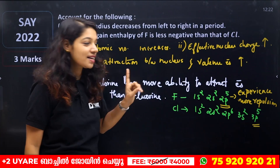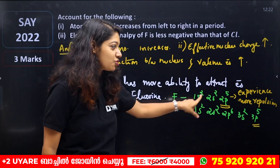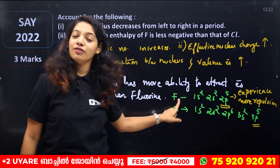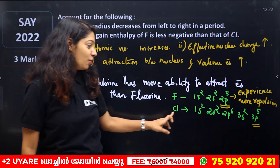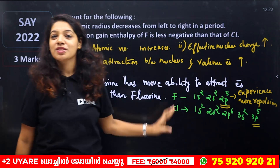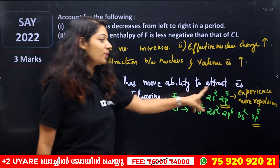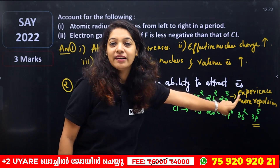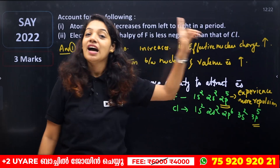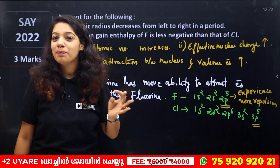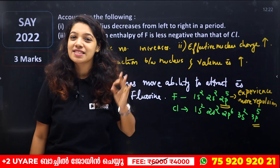Electrons are entering into the 2p orbital of fluorine, whereas in chlorine they enter the 3p orbital. Fluorine's incoming electron experiences more repulsion in the compact 2p orbital.